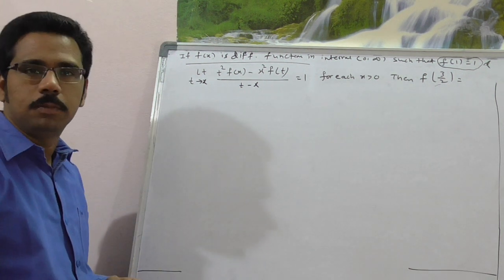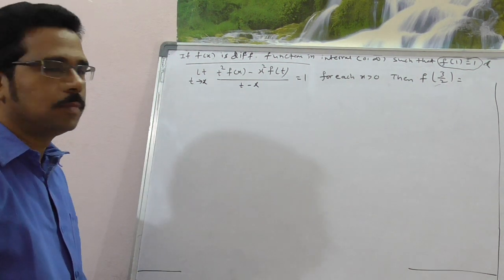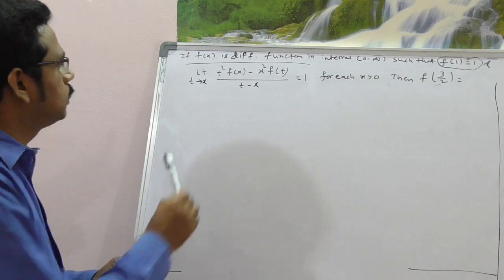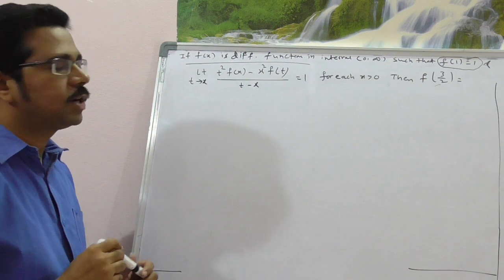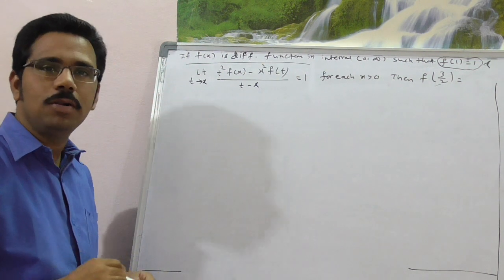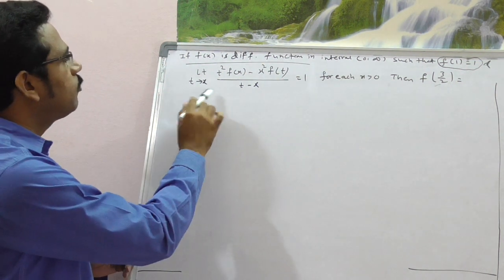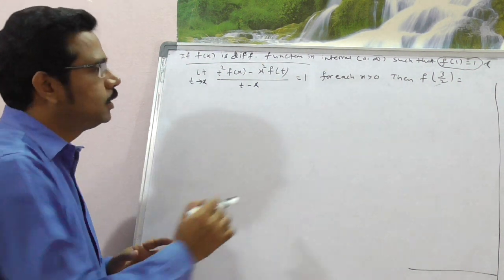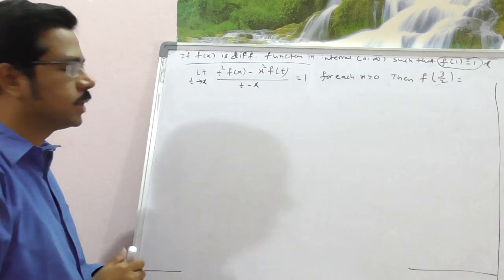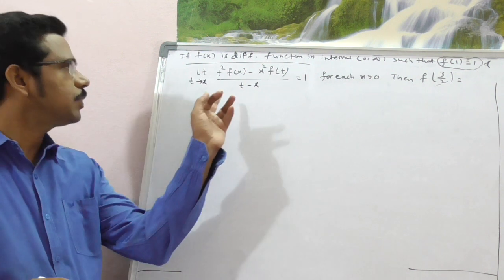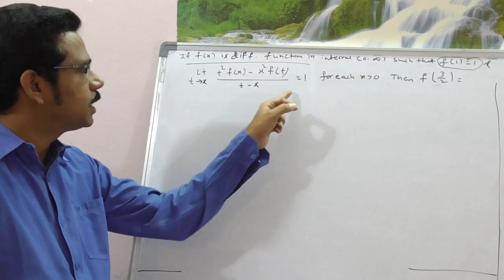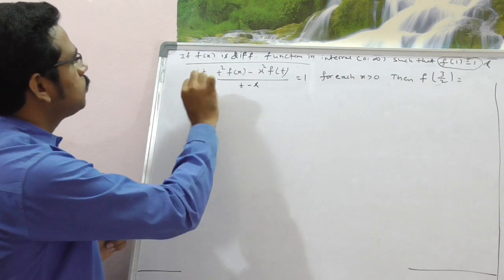This question is from JEE Main online exam conducted on April 9th, 2016. f(x) is a differentiable function on the interval (0, ∞) such that f(1) = 1. A limit function is also given. We have to calculate f(3/2). The given limit is: limit as t tends to x of [t²·f(x) − x²·f(t)] / [t − x] = 1.